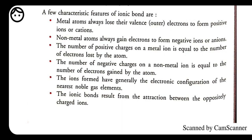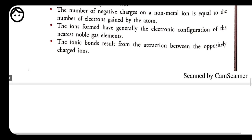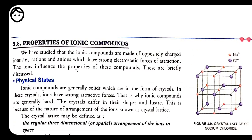Ions formed generally acquire the electronic configuration of the nearest noble gas. For example, oxygen's nearest noble gas is neon, so oxygen acquires neon's configuration. Hydrogen acquires helium's configuration. Ionic bonds result from the attraction between oppositely charged ions — because of the difference in charges (positive and negative), the bond formed is called an ionic bond. These are some key characteristics of ionic bonds.